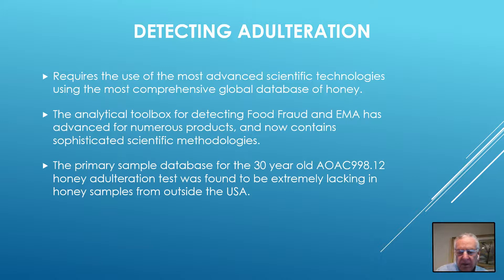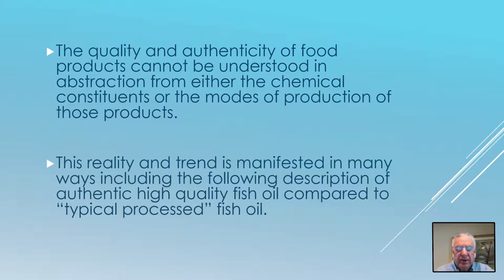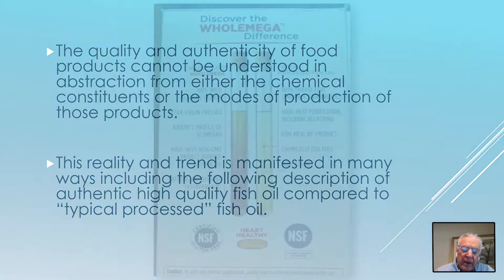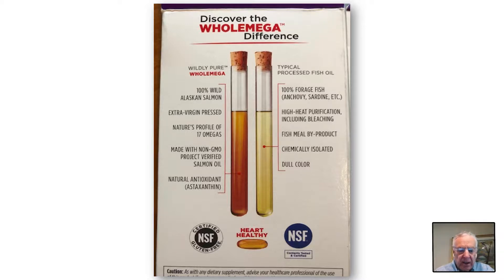Fortunately, the analytic toolbox for detecting food fraud in numerous products, as well as honey, contains very sophisticated scientific methodologies. The quality and authenticity of food products cannot be extracted from either the chemical constituents or the modes of production alone. This reality is manifested in many ways, including descriptions of fish oils, as manufacturers exercising social responsibility draw demarcations between legitimate and illicit modes of production.